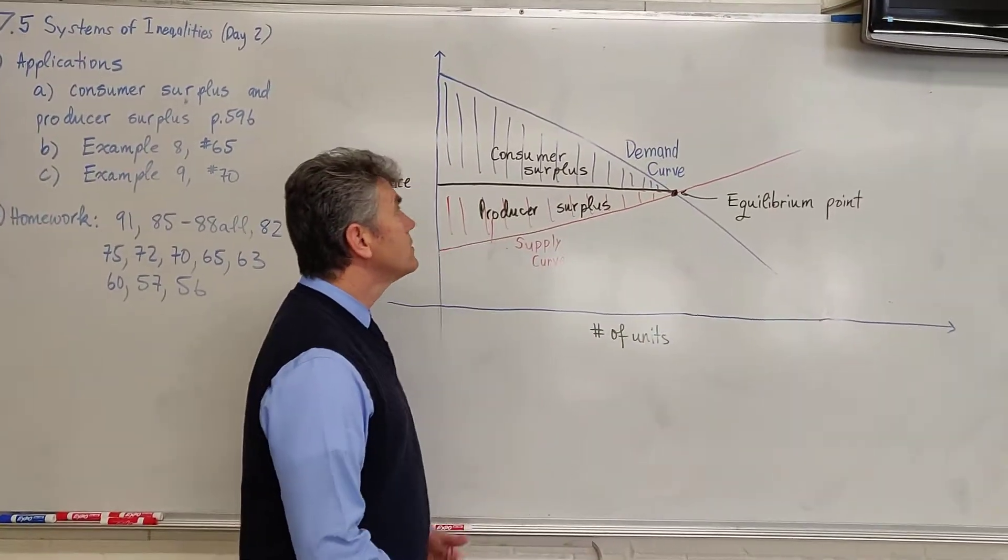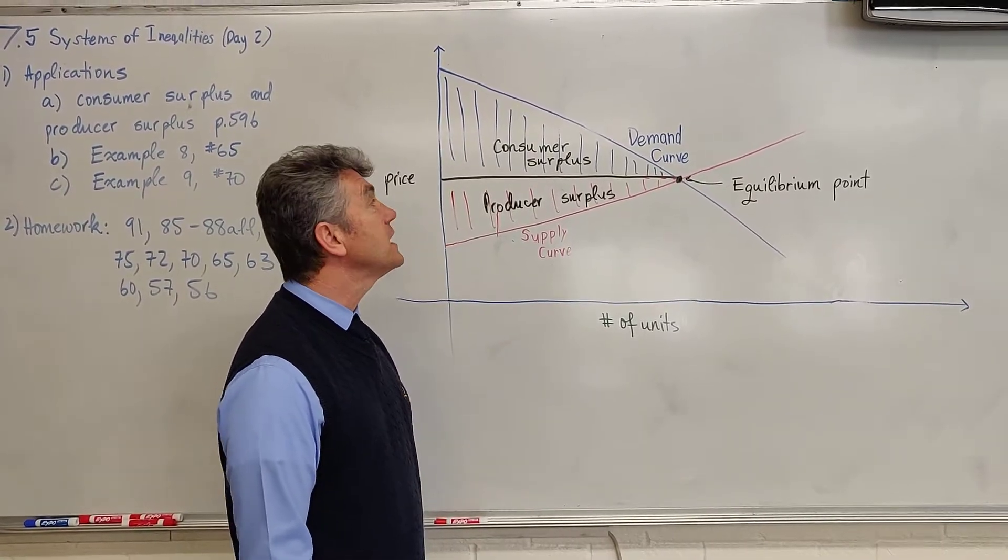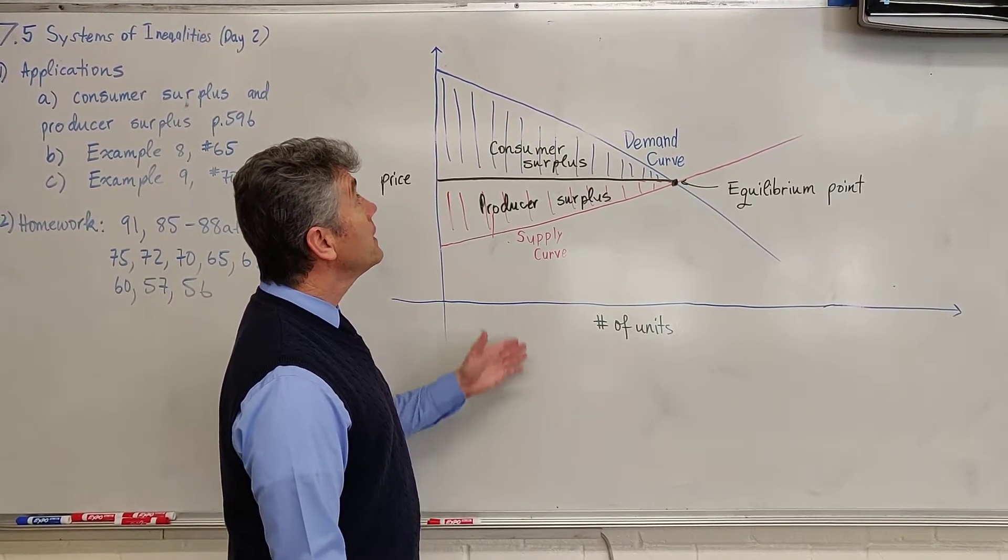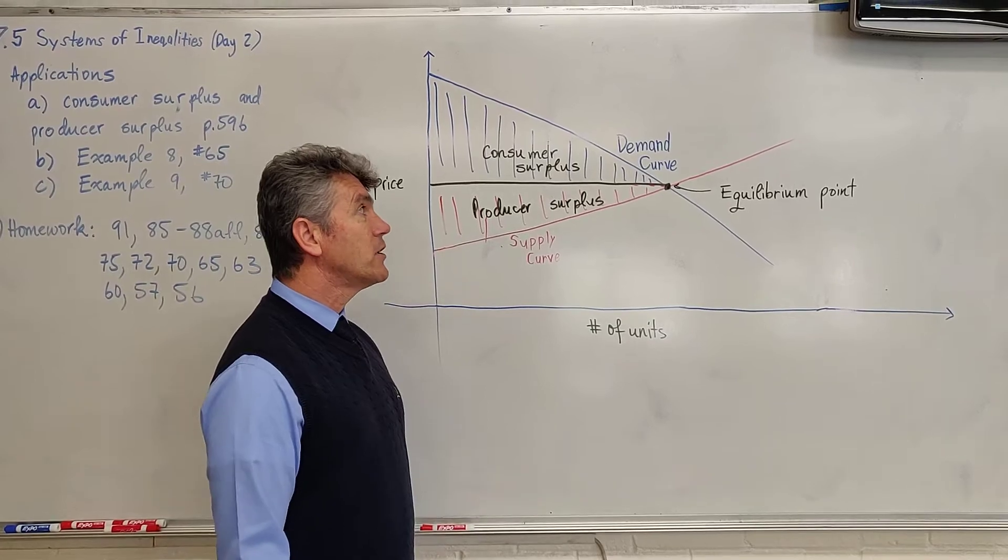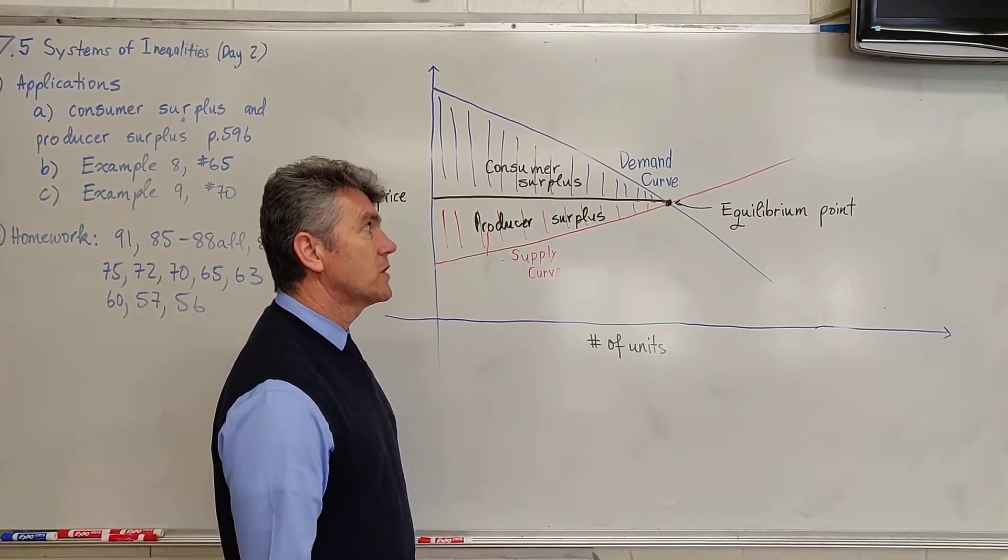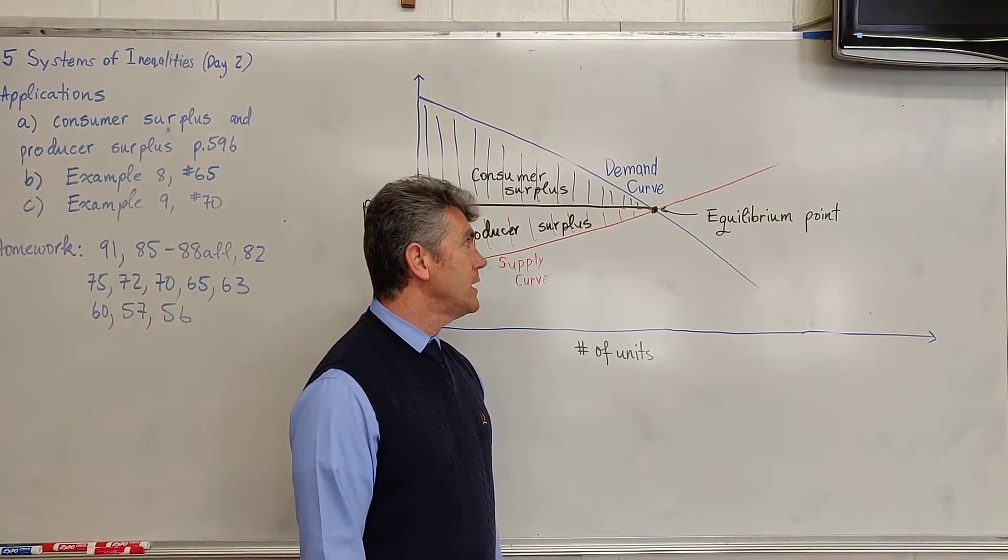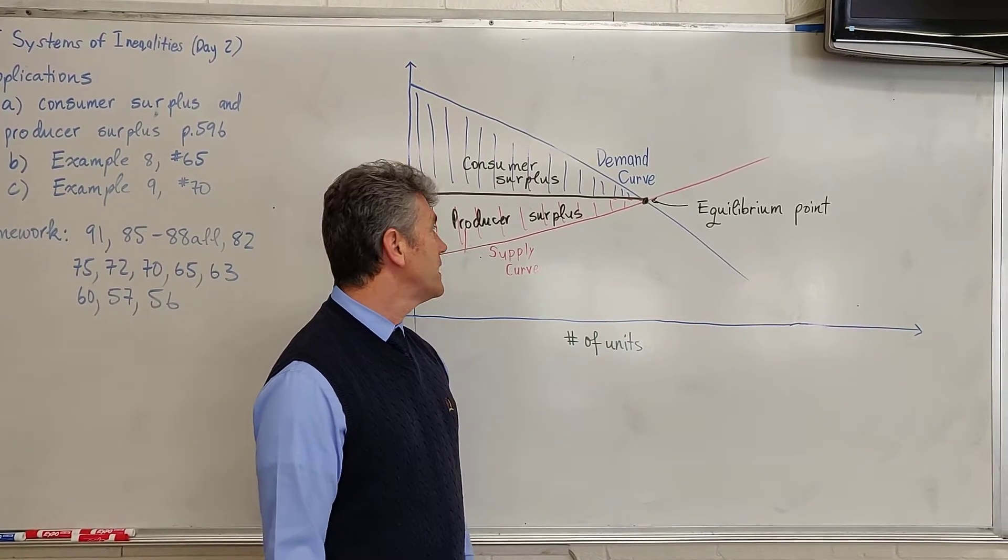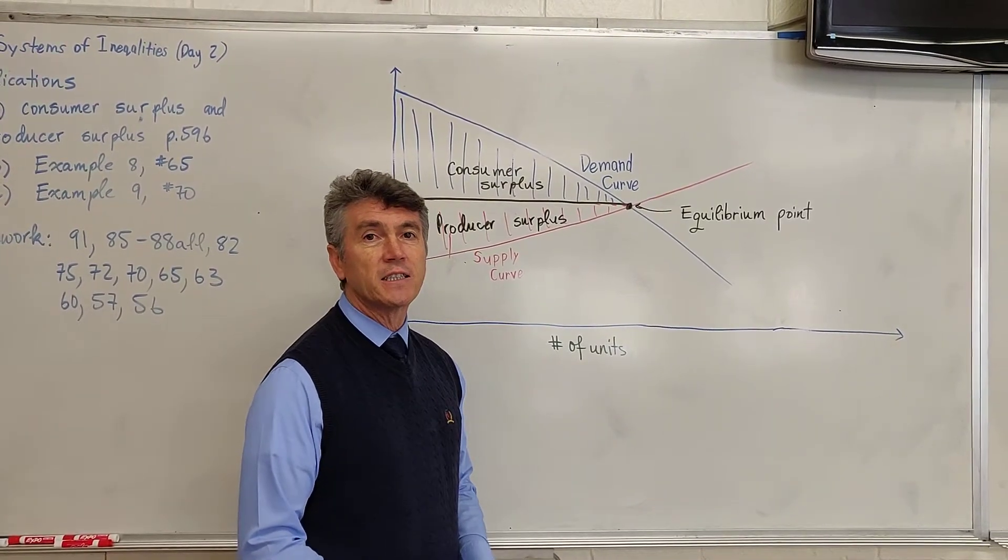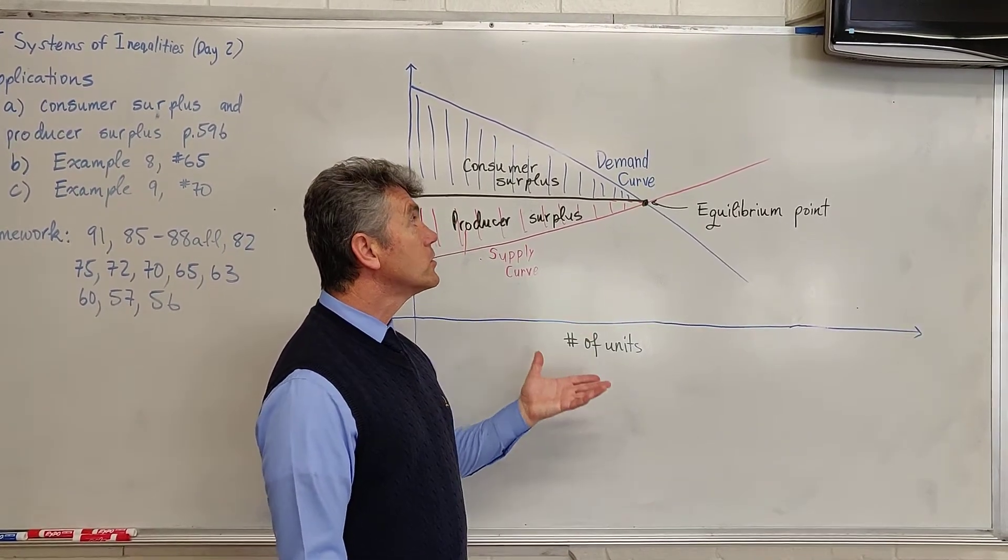To figure out the Consumer Surplus and Producer Surplus, the first thing you want to do is draw the demand curve, which is a line, the supply curve, which is also a line, and find the equilibrium point. The equilibrium point is the point where the demand and supply curves intersect. This is the point where all the units produced are sold.